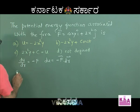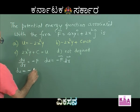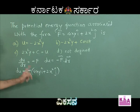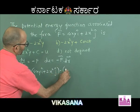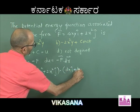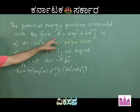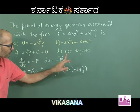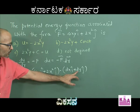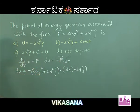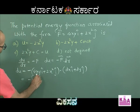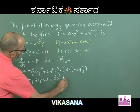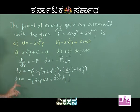So dU equals minus F dot dr. F is 4xy î + 2x² ĵ, and dr is dx î + dy ĵ (since the force function is only in two dimensions). Taking the dot product, we get dU = minus (4xy dx + 2x² dy).